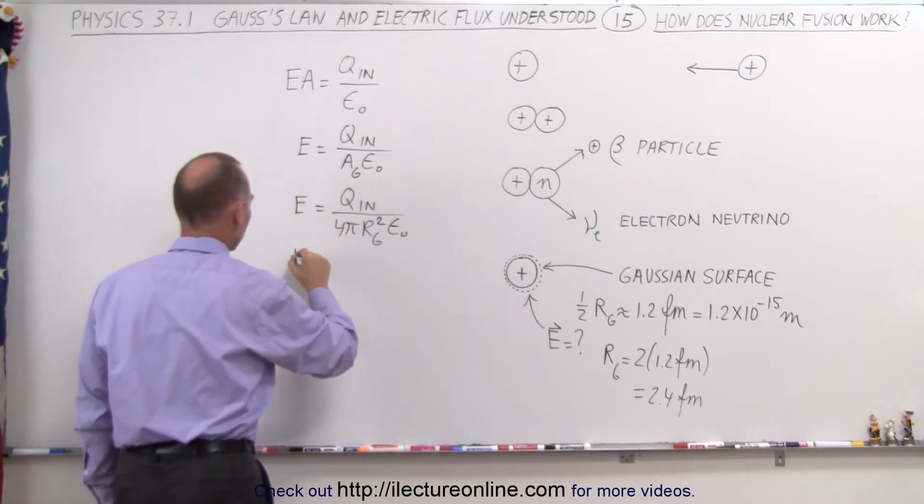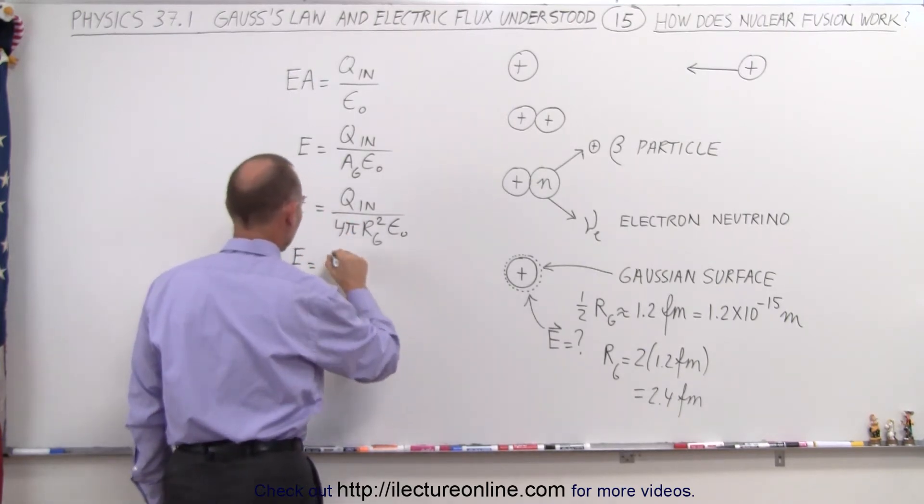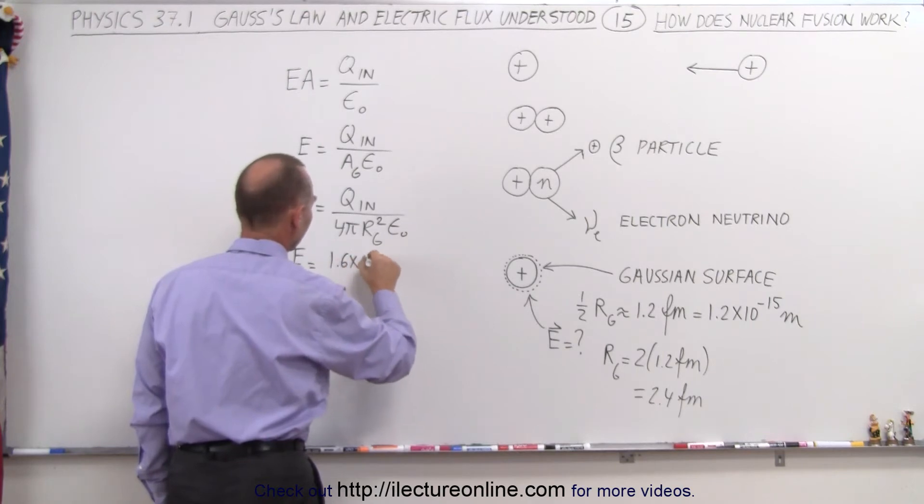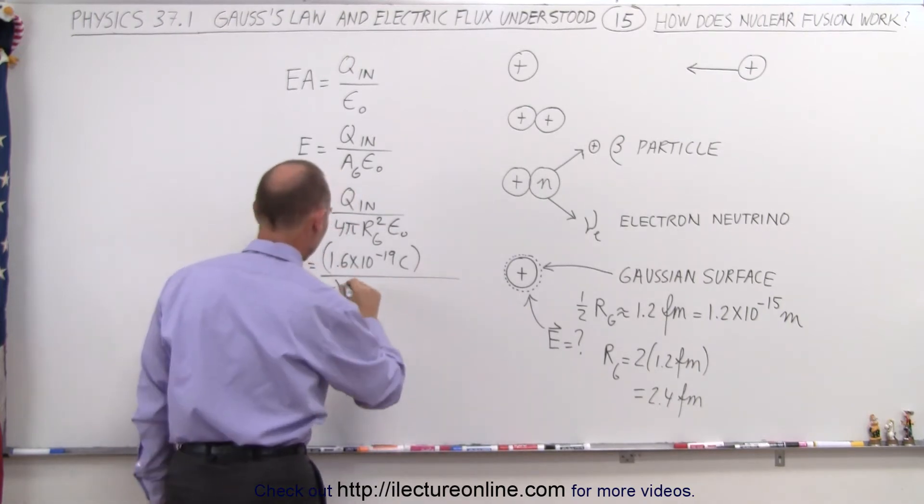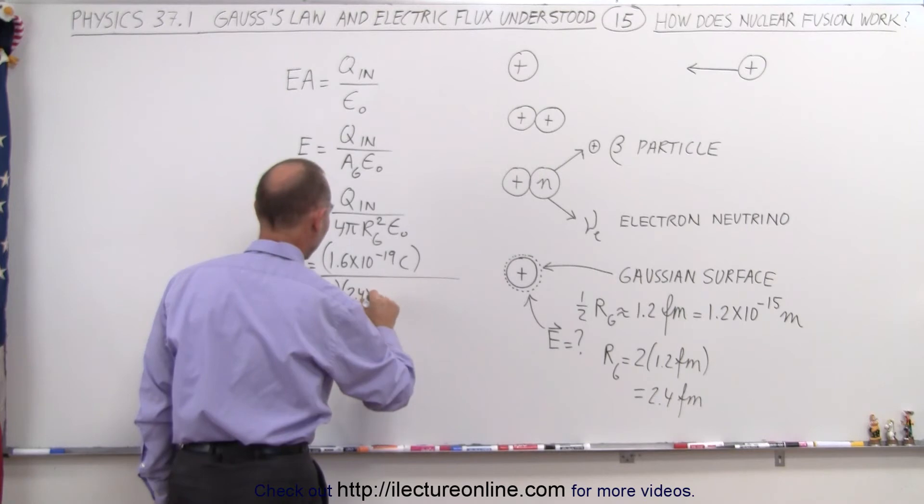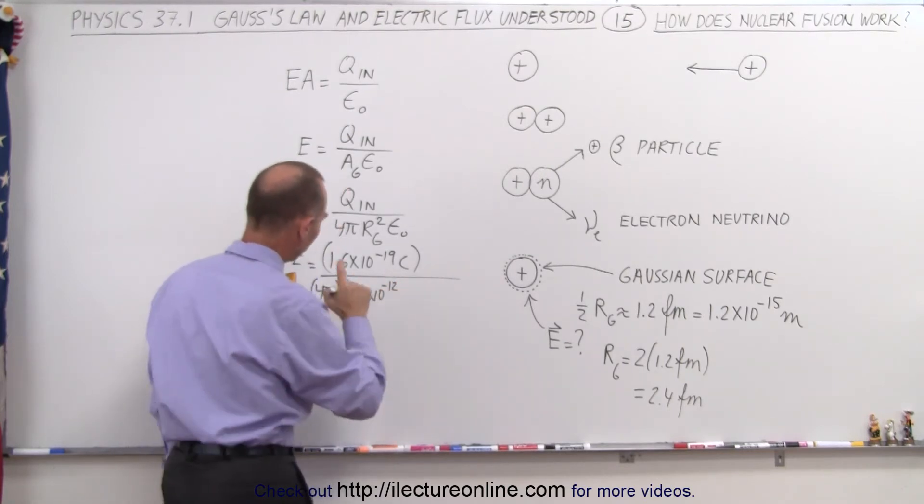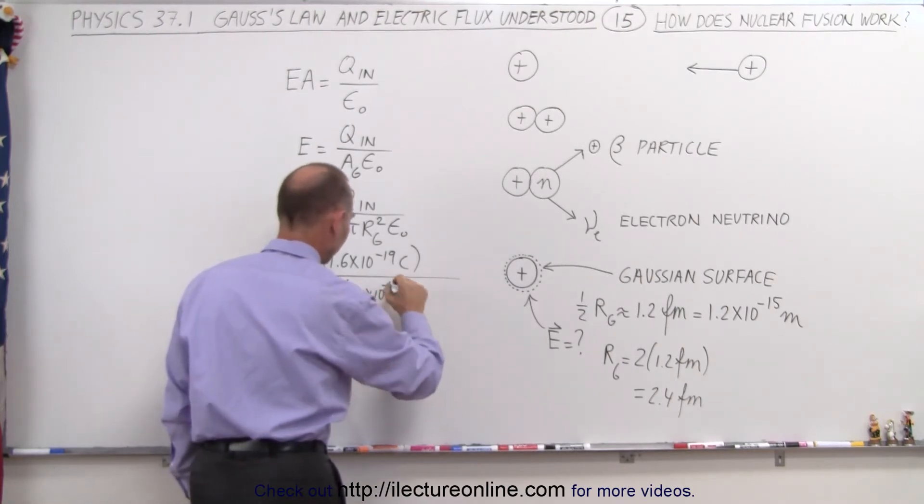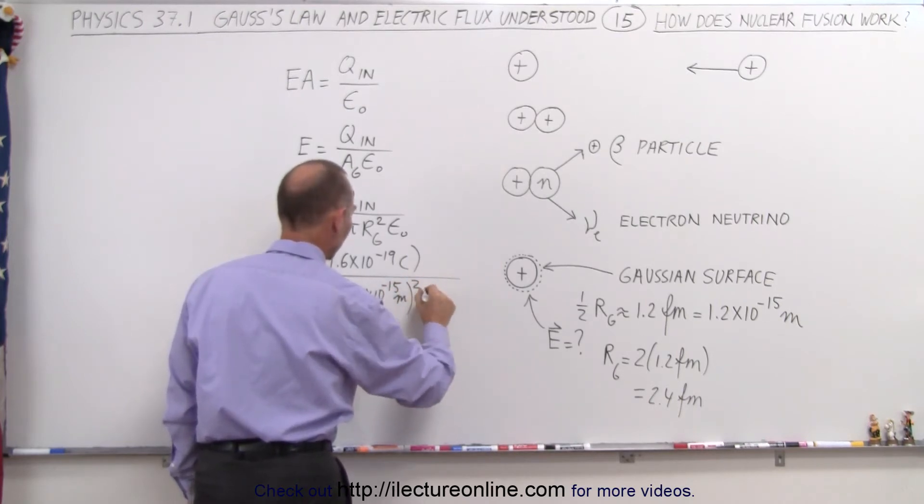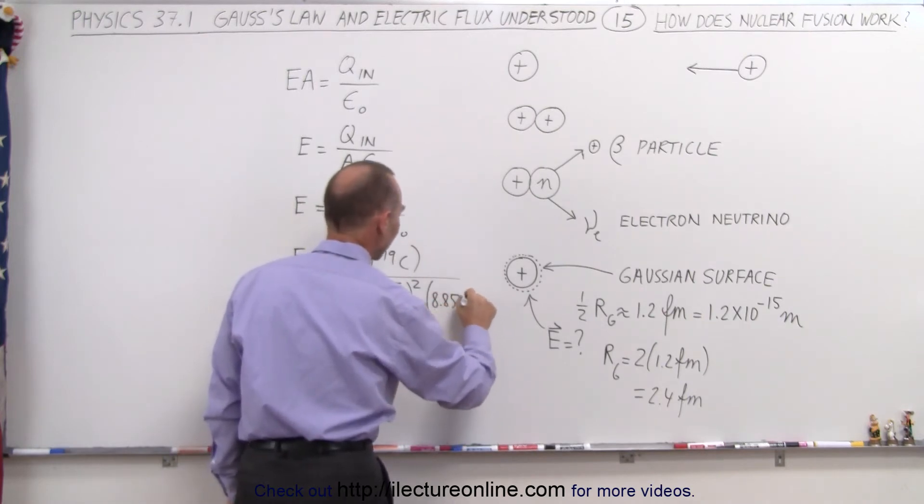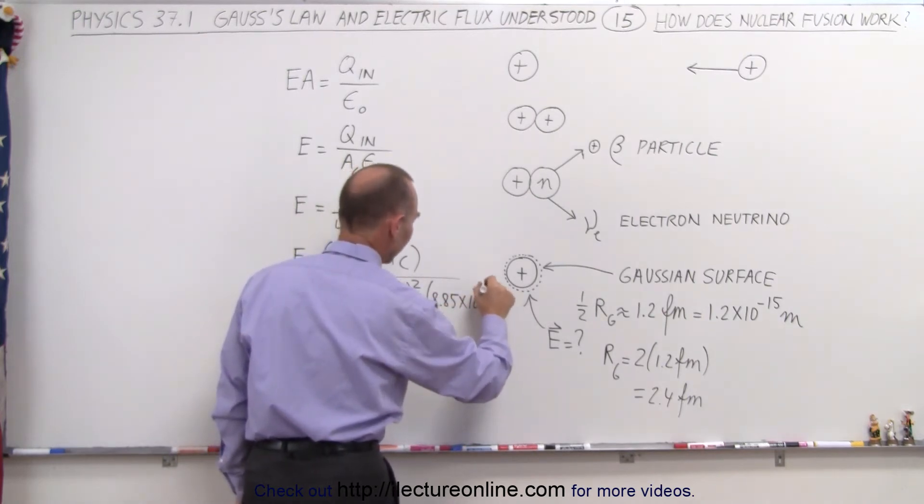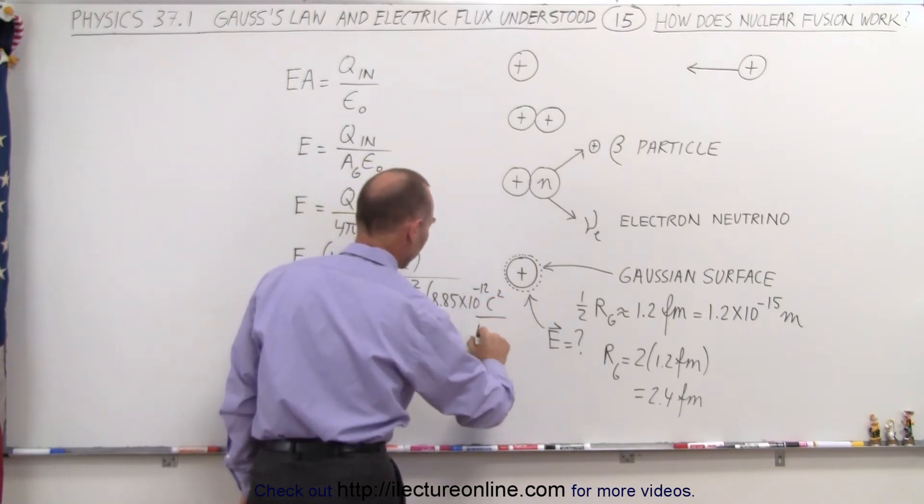So E is equal to Q inside. That's the charge of a single proton. That would be this many coulombs divided by 4 pi times the radius. So now we realize it's going to be 2.4 times 10 to the minus 12. Oh, not 12. Femtometer is minus 15 meters. We have to square that times the epsilon sub nought, which is 8.85 times 10 to the minus 12. That would be Coulomb squared divided by Newton meter squared.